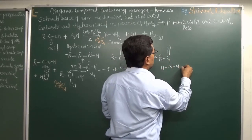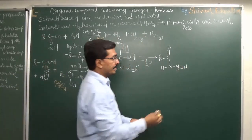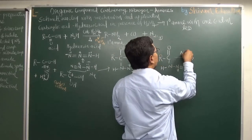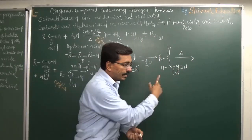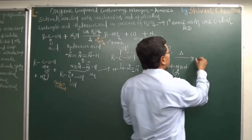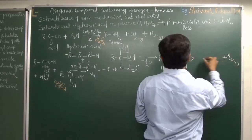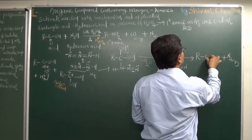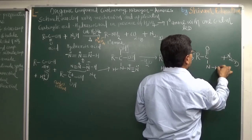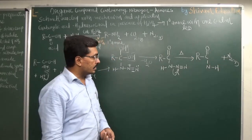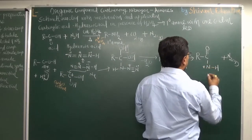When we heat this structure, nitrogen gas — being the best leaving group in the world — takes its electron pair and is removed as N₂ gas. We get the structure R-C=O with nitrogen still having a hydrogen and a positive charge.